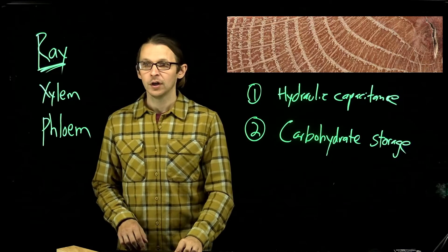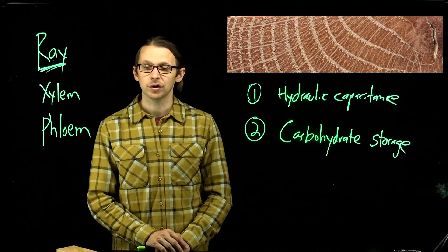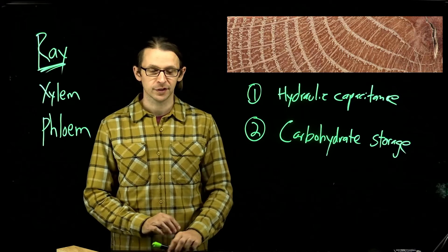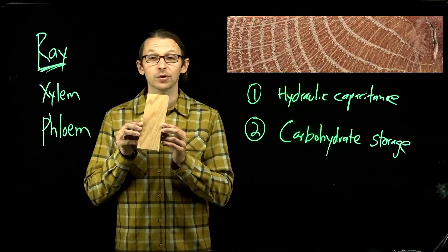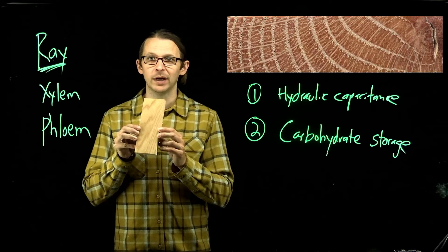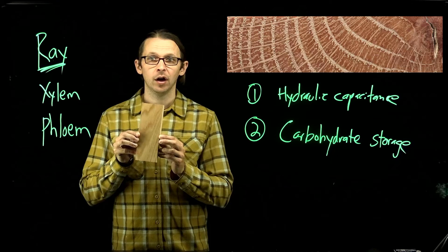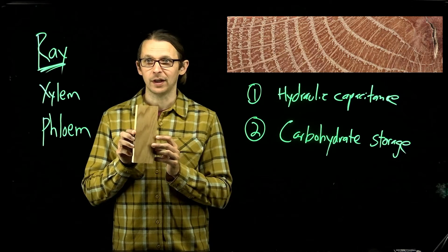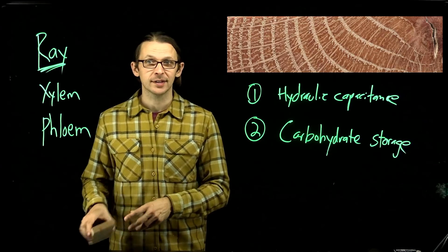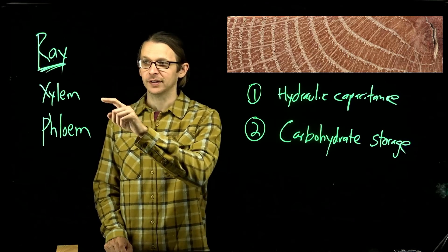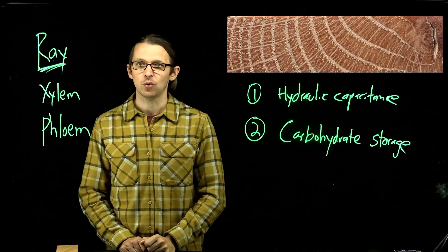Carbohydrate storage. So rays are a really important aspect of the structure and function of trees, particularly in their stems. You can see it on some wood products — in the oaks, and particularly in white oak, it's really apparent. There are all these small flecks through the wood of oaks where those rays are showing through the grain. But they're present in most if not all trees, as they form the hydraulic nexus between the xylem and phloem, providing hydraulic capacitance and carbohydrate storage.